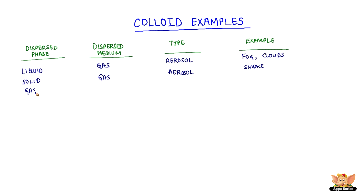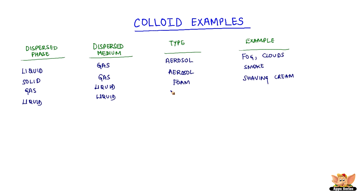Gas dispersed in liquid is called foam. Shaving cream is an example of gas in liquid. Liquid dispersed in liquid is called emulsion, and milk is an example of emulsion.